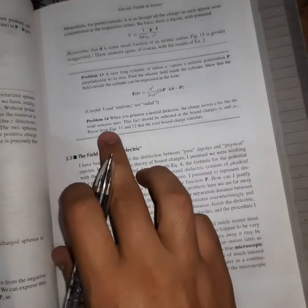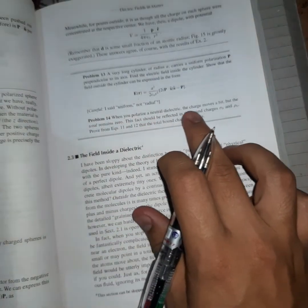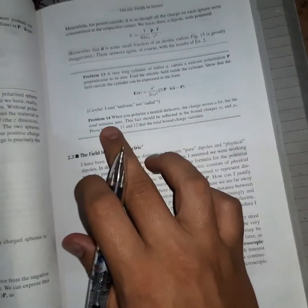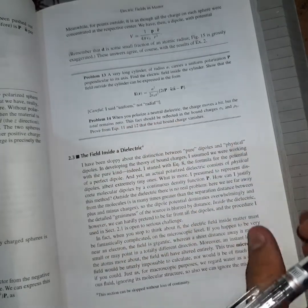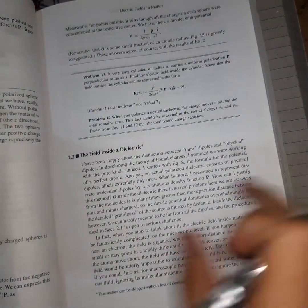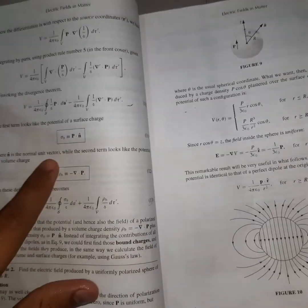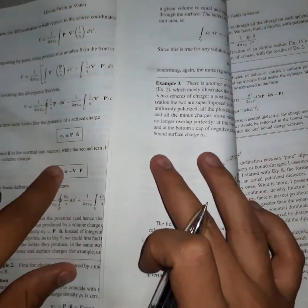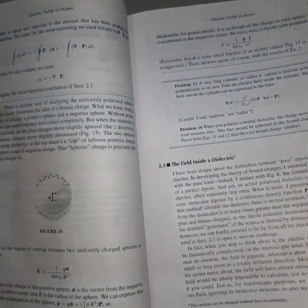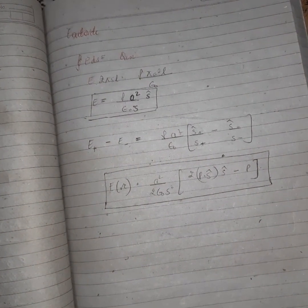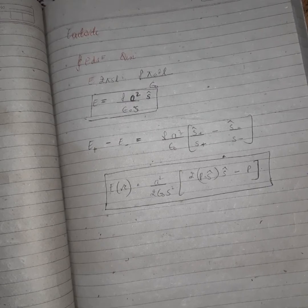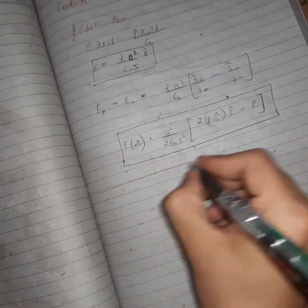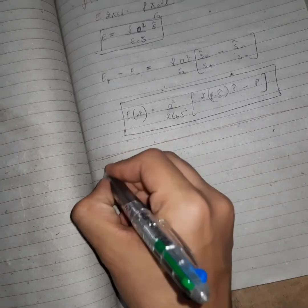We can discuss problem number 14 here only because it is a bit easier problem which says when you polarize a neutral dielectric the charge moves a bit but the total remains zero. The fact should be reflected in bound charges. Prove from equation 11 and 12 - equation 11 and 12 was sigma b and rho b. So we need to take these equations and prove that total charge remains zero inside a neutral dielectric when we move a charge a bit. Let me just solve it here only, this is a very easy question, problem 14 on page 179.